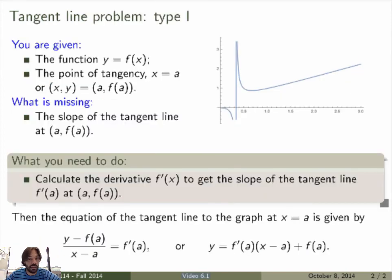So what is the problem here? So you're given the function. You know what the function is. And you also know what the point of tangency is. Well, you may only know the x-coordinate, but calculating the y-coordinate is pretty easy. What you don't know is the slope of the tangent line.